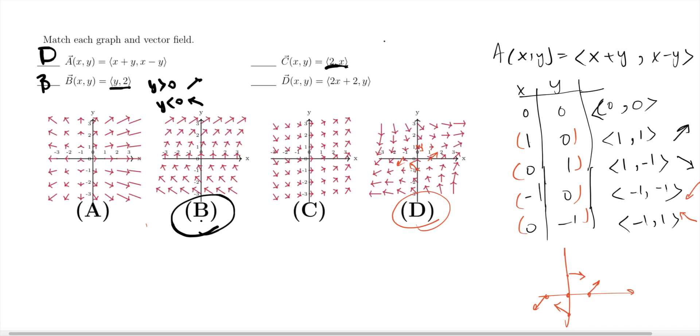For this one, the second component depends on x. If x is positive, the direction for y is going to be positive. If x is negative, the direction for y is going to be negative.